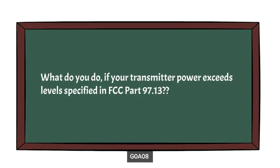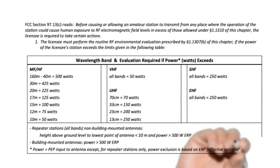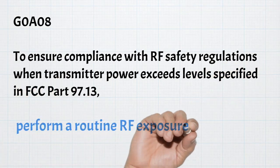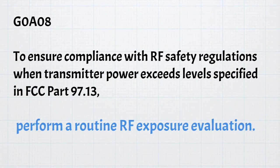Another safety question is: what do we do if our transmitter power exceeds the levels specified in FCC Part 97.13? Most of the values in FCC Section 97.13C exceed those of a transceiver running barefoot — that is, without an amplifier. When you add an amplifier, you could exceed some of these limits, and then you need to follow the advice of the FCC. For the exam, you need to know that to ensure compliance when transmitter power exceeds levels specified in FCC Part 97.13, perform a routine RF exposure evaluation.